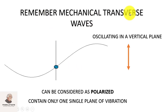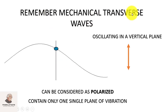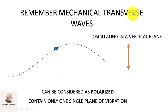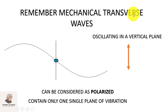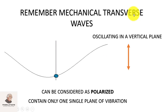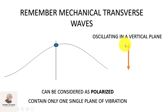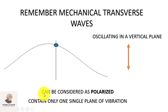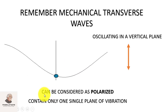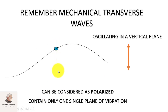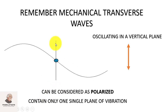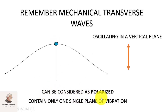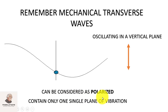You need to remember the mechanical transverse wave in which a rope is oscillating up and down in a vertical plane, or left and rightward in a horizontal plane. A single plane vibrational wave can be considered as a polarized wave.